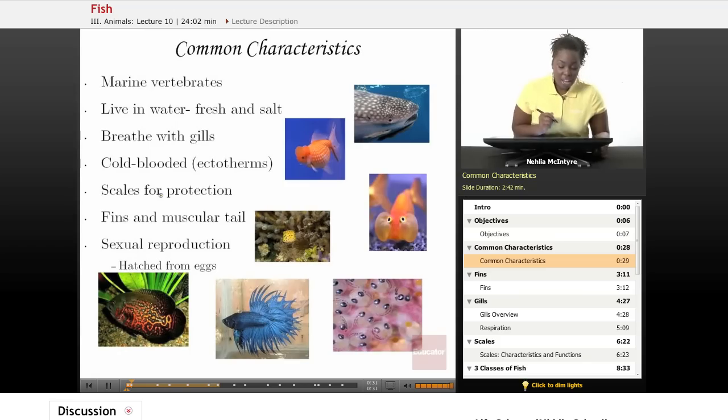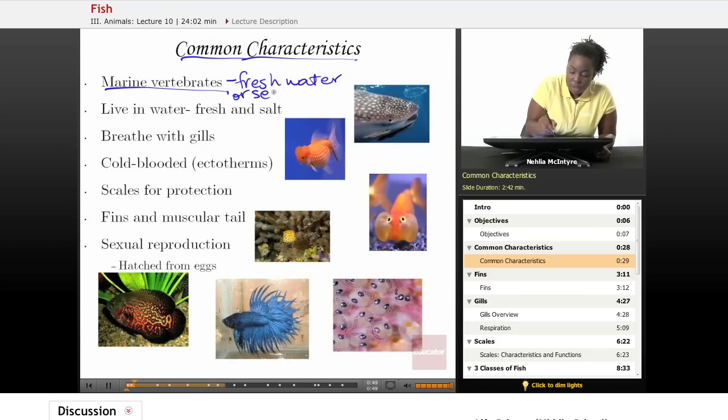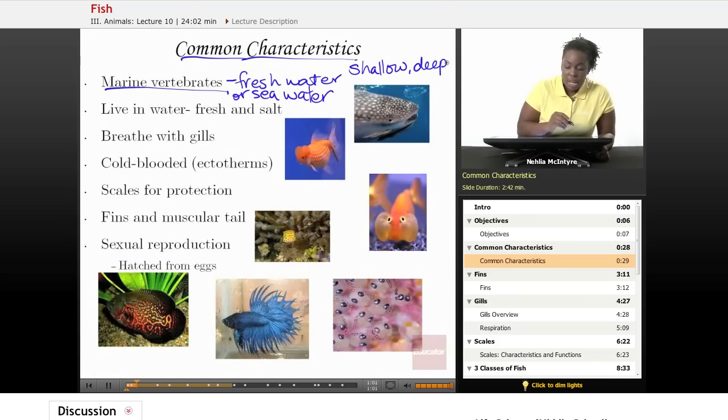Fish are a very diverse species of organisms, and they have a few common characteristics that all fish share. All fish are marine vertebrates. That means that they live in either freshwater or seawater. They can live at varying levels, meaning you can have some fish that live in shallow waters, and then you have fish that live in very deep water. It just depends on the species or the type of fish.